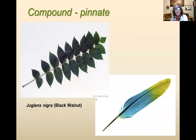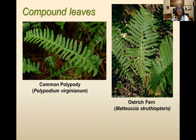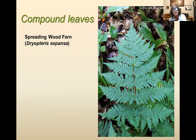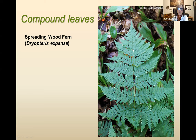Then there are pinnate compound leaves — you can think of 'pinnate' as a feather. The bud is here, and then all the leaflets are along that stem, as in black walnut. With ferns, you can get twice-compound: the frond splits first with side pinnae, then splits again — that would be doubly pinnate. Ferns can actually do triply pinnate — the third level of frond can be divided too, so that's three times compound.